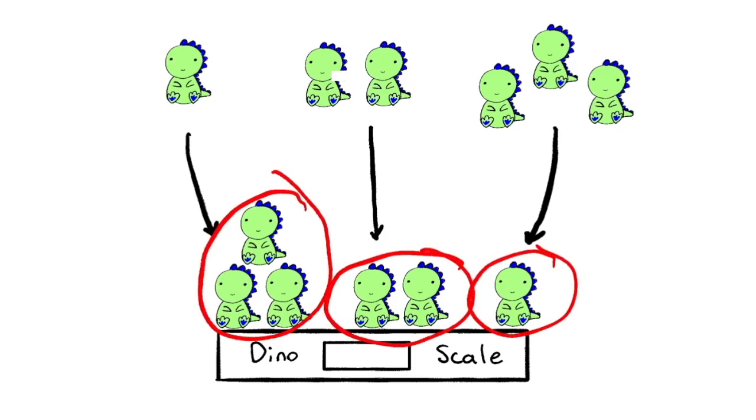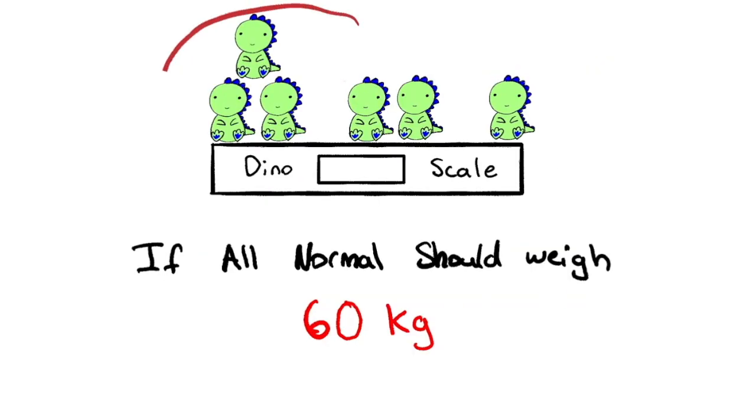And now there are a few possibilities for what the scale could read. So if we imagine all six of these dinosaurs were normal, the total would be 60 kilograms. But clearly, since some of them have to be fake, it won't be 60. But 60 can be used as a baseline.